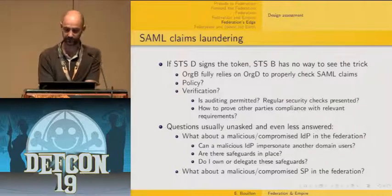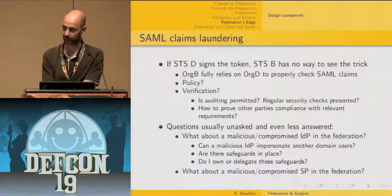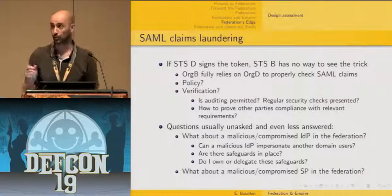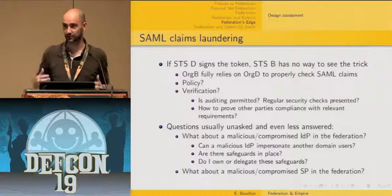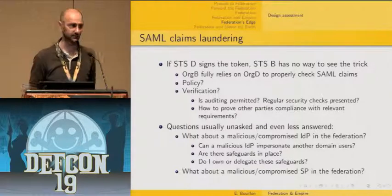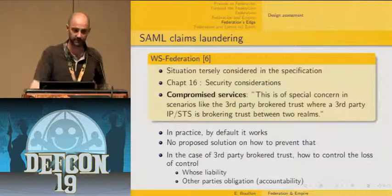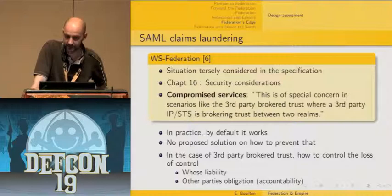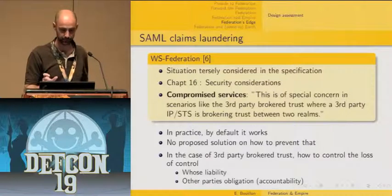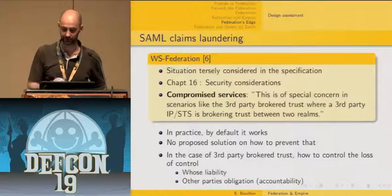The bottom line question is: what about a malicious or compromised IDP in a federation? Can a malicious IDP impersonate another domain's users? Are there any safeguards in place — business controls that prevent that — and who owns those safeguards? Looking at implementations, by default these safeguards are not implemented. Going back to the WS-Federation specification, this kind of consideration is only cursorily mentioned in the compromised services bullet, which acknowledges it is a very major issue in third-party broker trust relationships, but proposes no solution on how to prevent it.